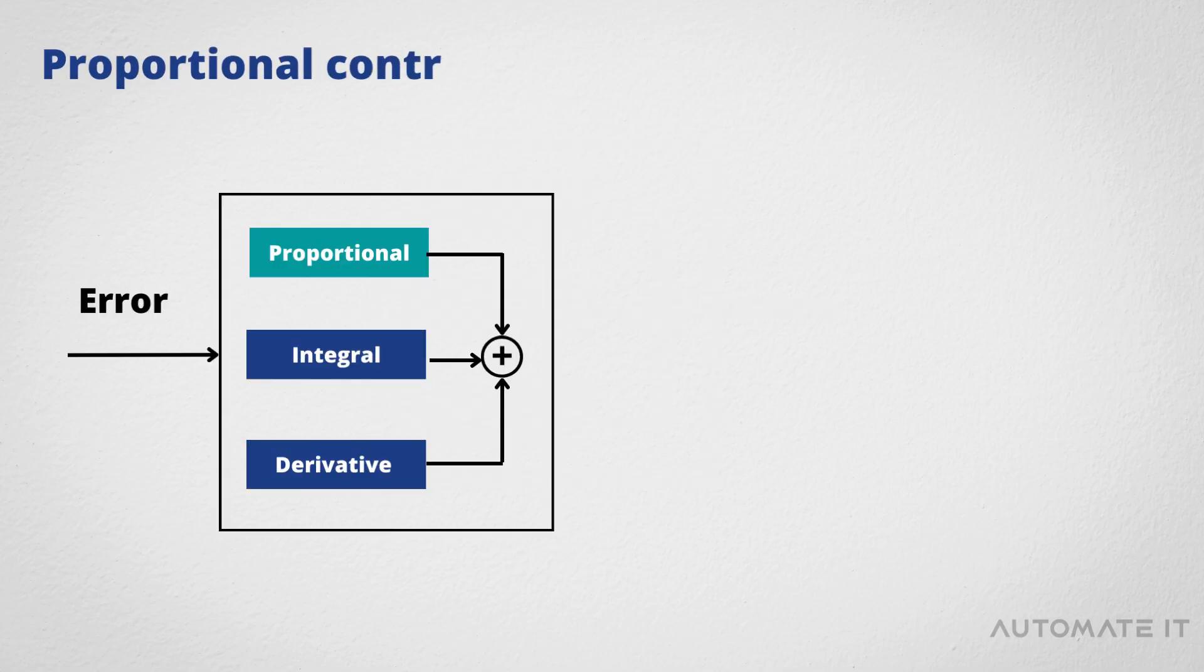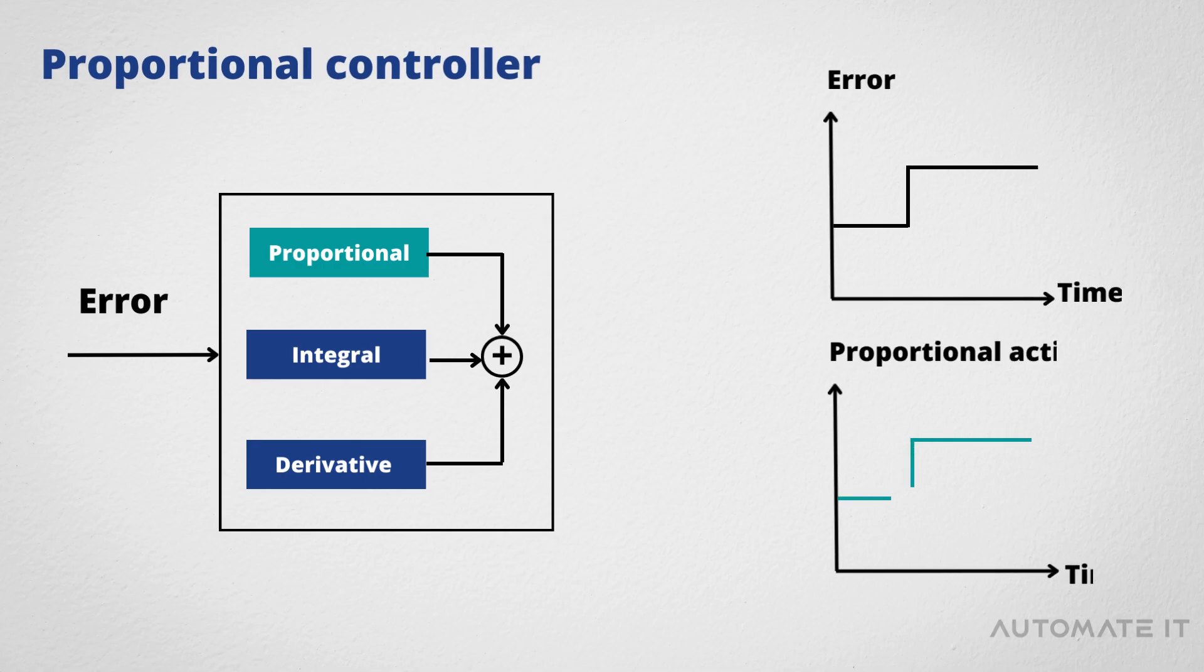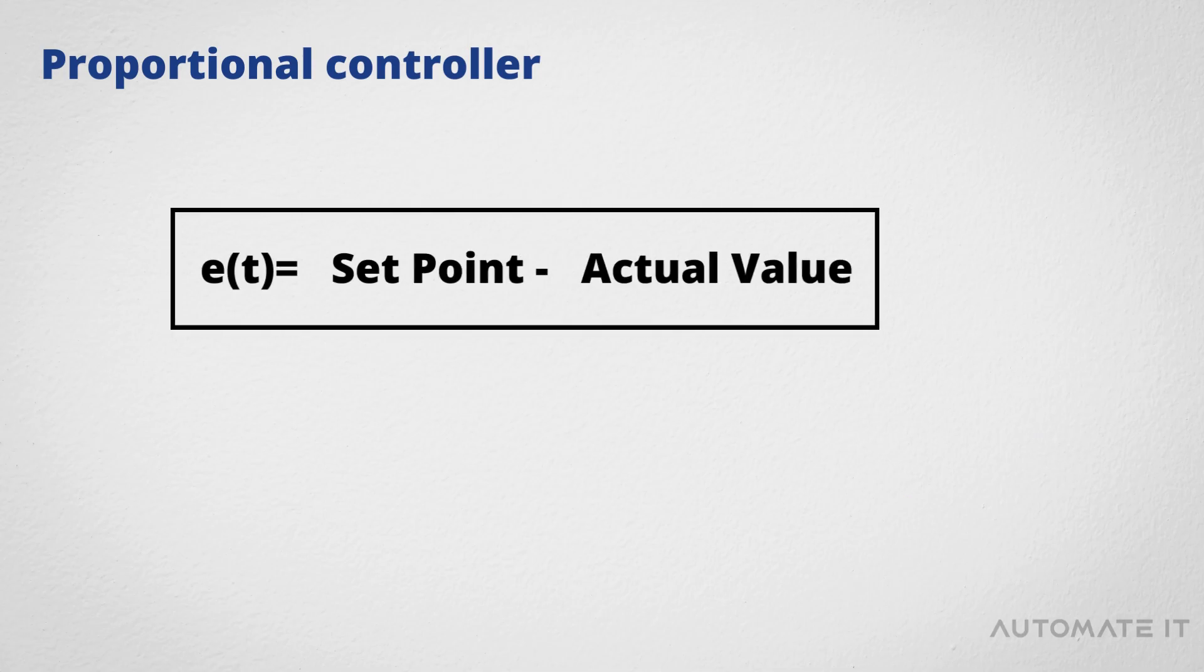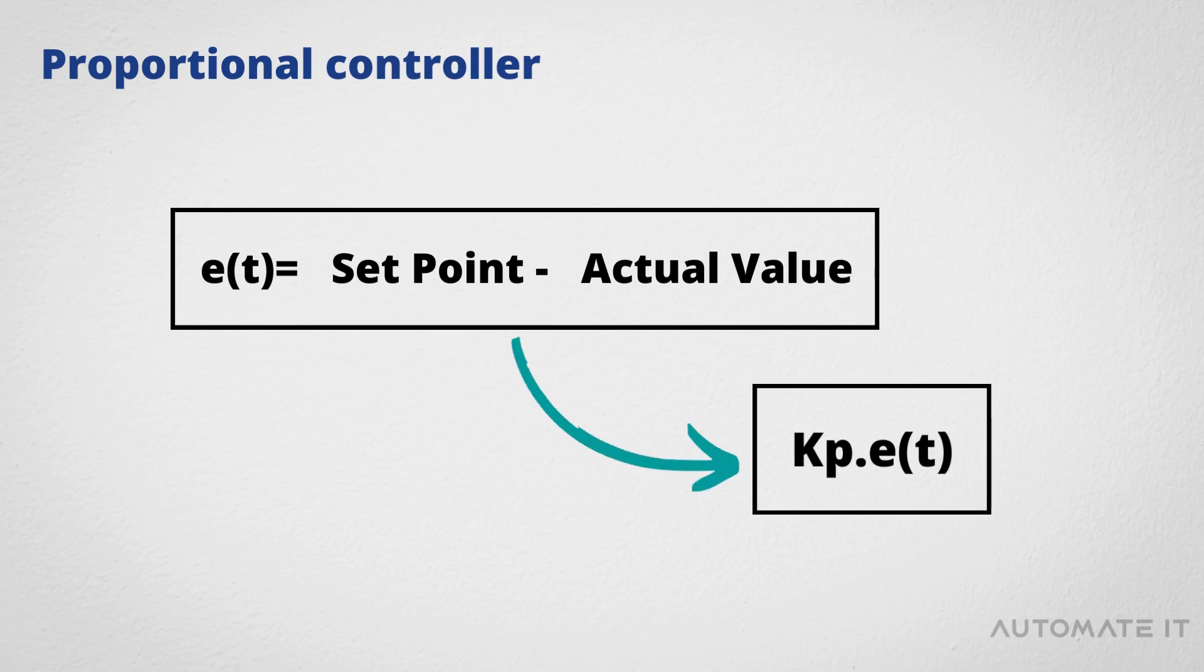Proportional or P Controller gives an output that is proportional to the current error. It compares the desired or setpoint with the actual value or feedback process value. The resulting error is multiplied with a proportional constant to get the output.